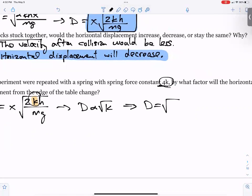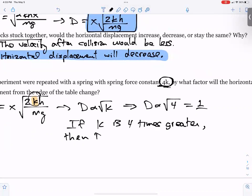4k means 4 times more, which is 2. Which means if k is 4 times greater, then d is twice as far. Increases by a factor of 2.